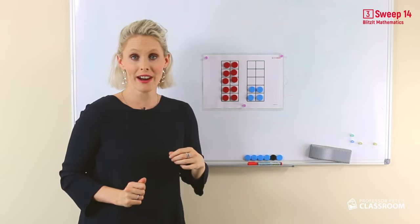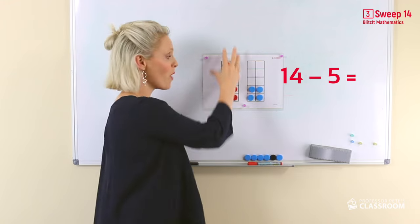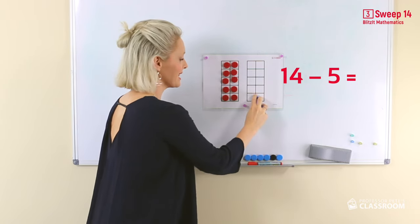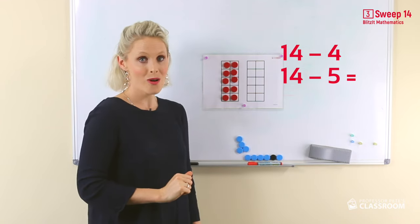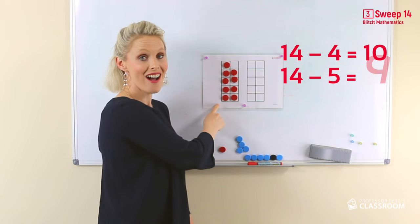The turnaround, 14 take away 5. We know 14 is 1 ten and 4 ones. So we take away the 4 and one more to make 5. The answer is 9.